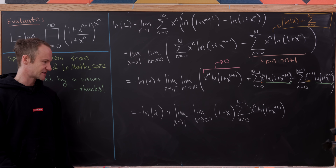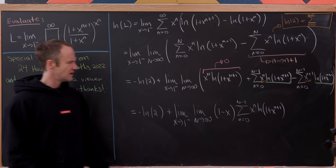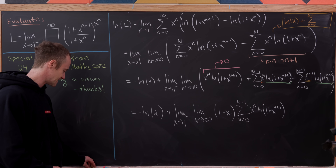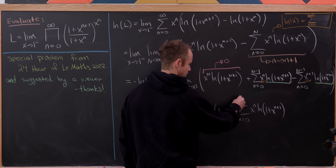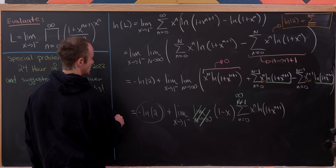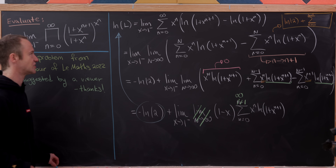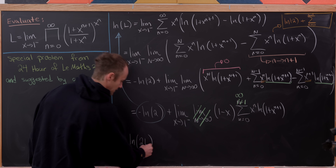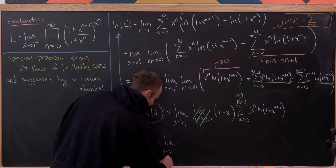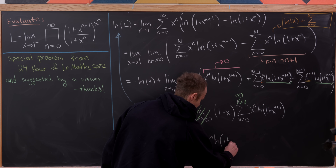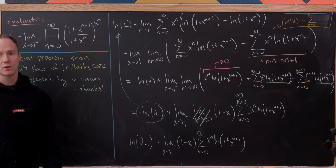That's by factoring those last terms. Then taking the limit as capital N goes to infinity turns that finite sum back into an infinite sum. Moving minus ln(2) to the left-hand side and combining with ln(L) using logarithm rules gives: ln(2L) equals the limit as x goes to one from below of (1 − x) times the sum as n goes from zero to infinity of x^n · ln(1 + x^(n+1)).